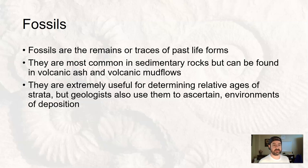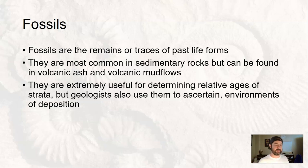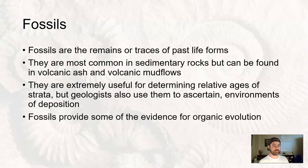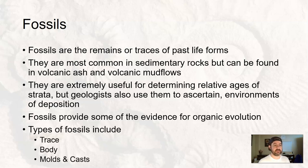We can also use them to ascertain environments of deposition — this is a sea fossil, this is a shallow sea fossil, this is a land animal fossil or a plant from land fossil. So we can also determine sedimentary deposition environments. Obviously, fossils provide some of the evidence for organic evolution amongst what we also see on the planet now. And there are a few different types of fossils — we'll categorize them in three categories: trace fossils, body fossils, and molds and casts.